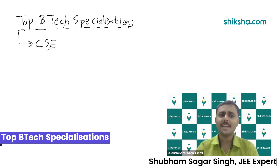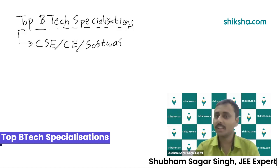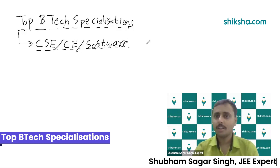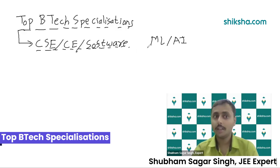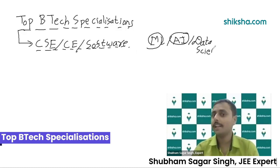What are the top B.Tech specializations? The top B.Tech specialization is CSE — Computer Science and Engineering. There are other variations called Computer Engineering or Software Engineering, but I call this entire field Computer Sciences. Computer Science is a very broad topic. It covers Software Development, Web Development, App Development, and it also covers ML and AI — Machine Learning and Artificial Intelligence.